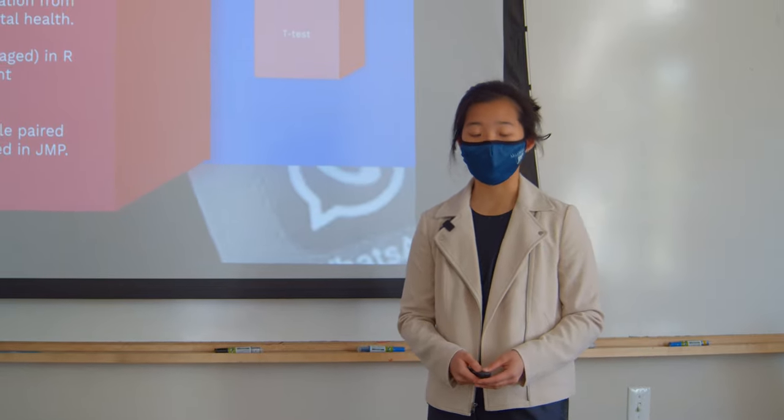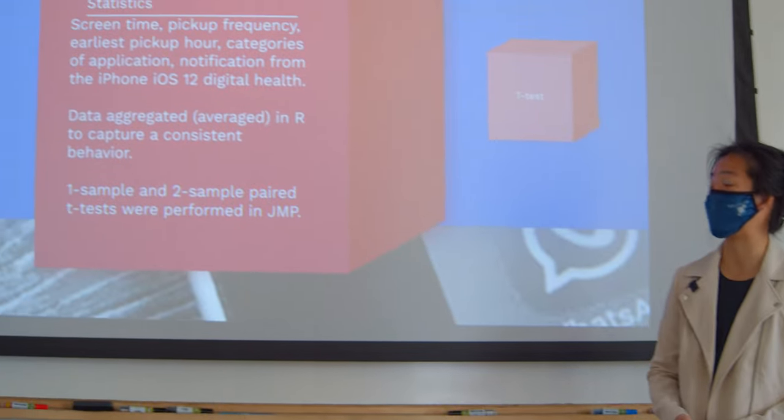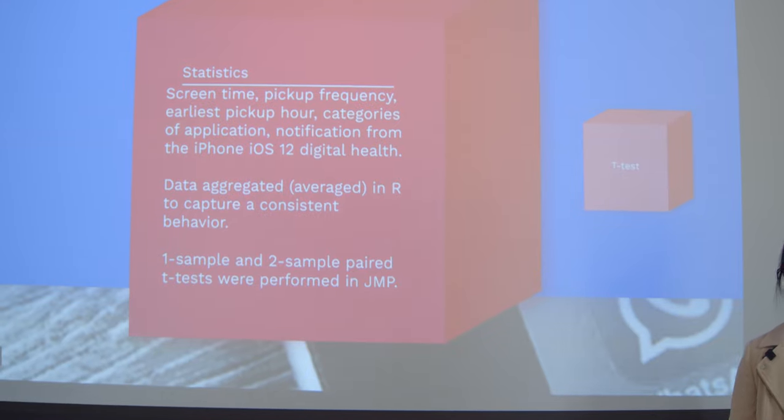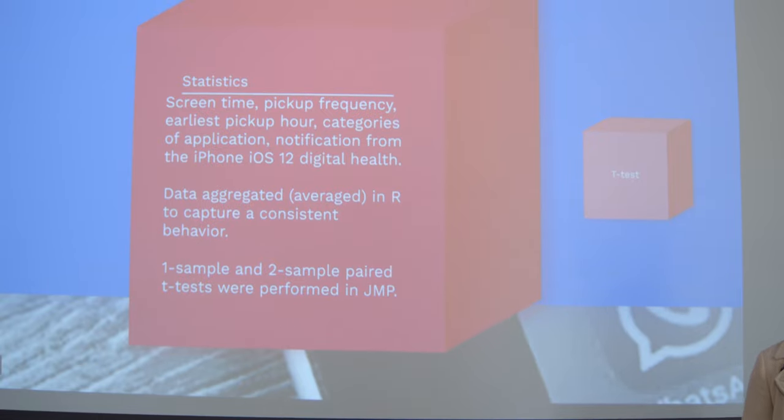These five metrics were collected on a daily basis. There was screen time, the pickup or checking frequency of their phone, and the earliest pickup hour. So if you wake up at 7 and then you turn on your phone, your earliest pickup hour would be 7 a.m. And if you go to bed late, it would probably be something like 12 or 5 a.m.